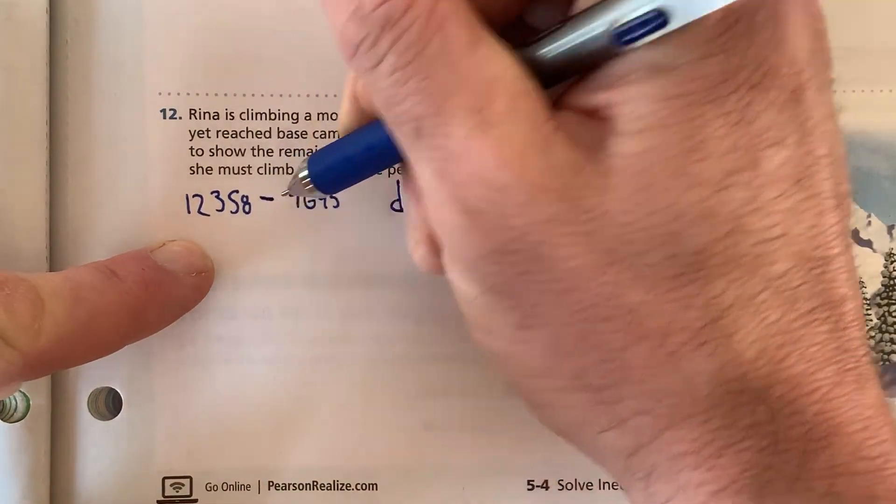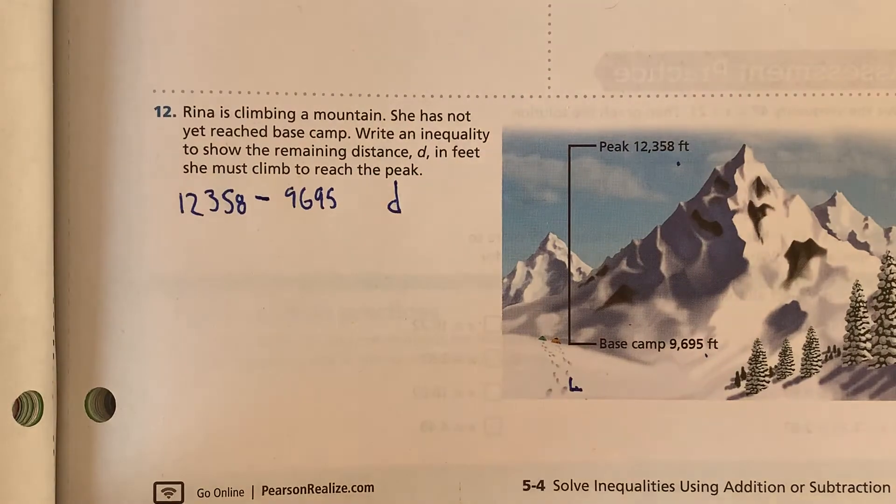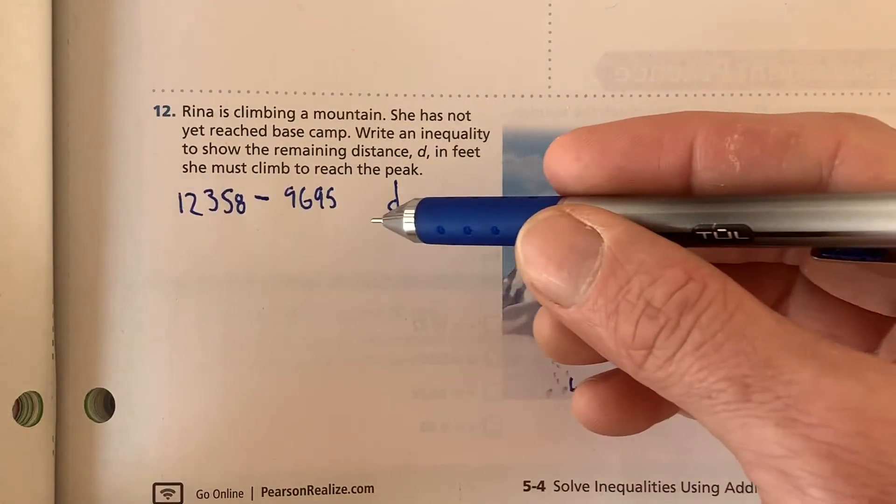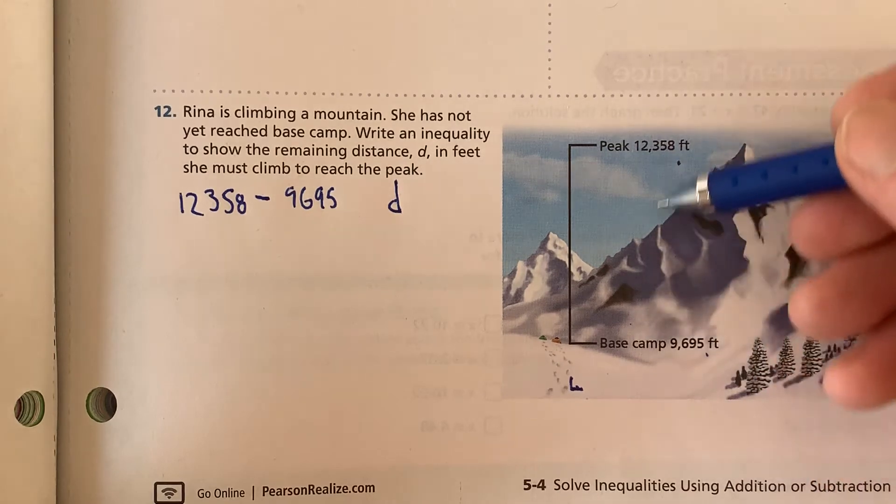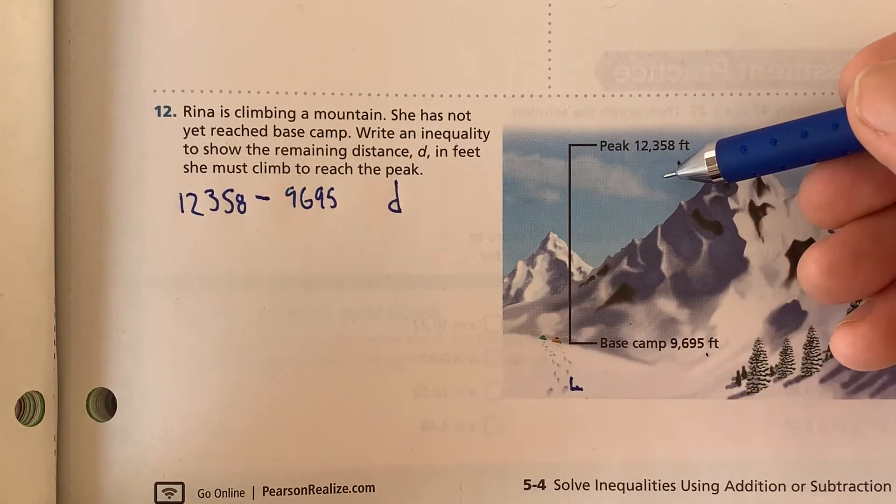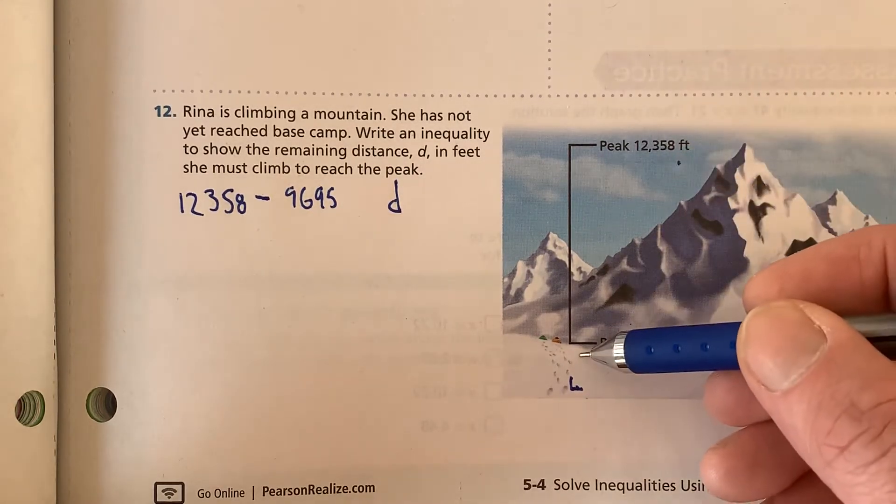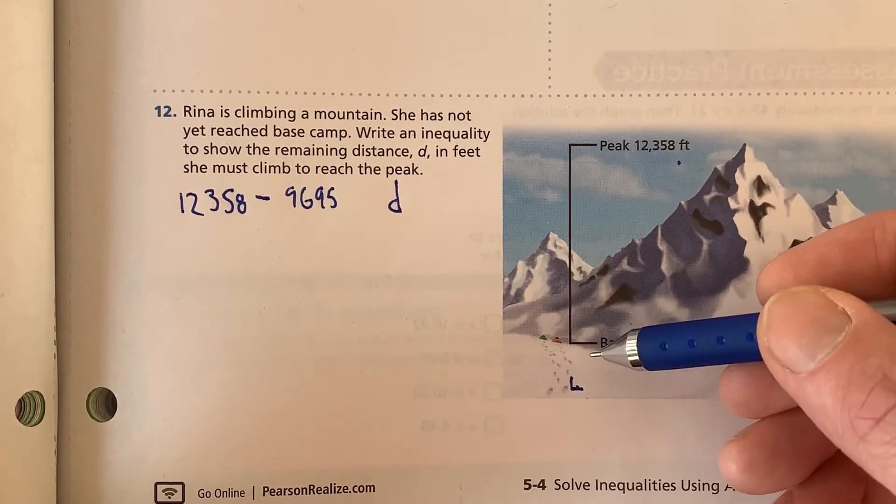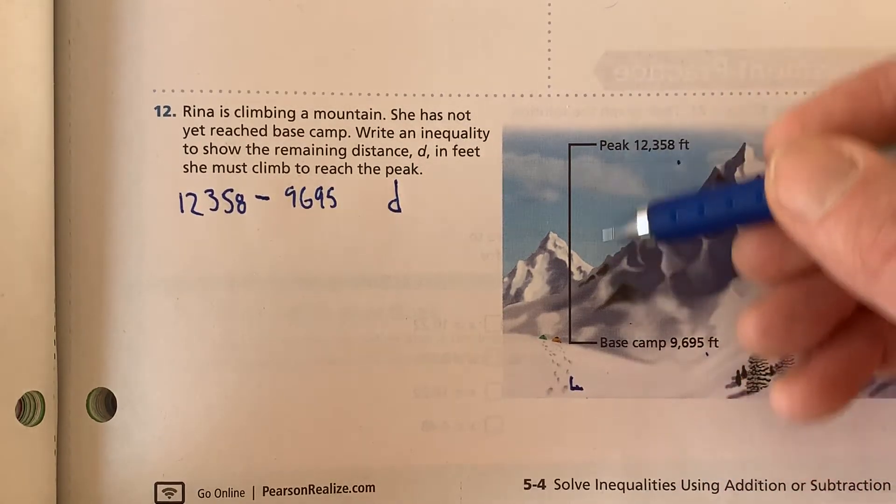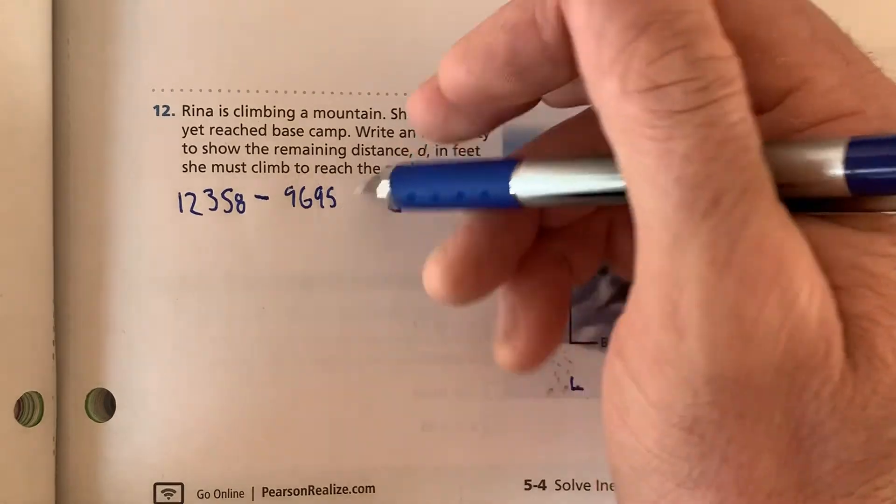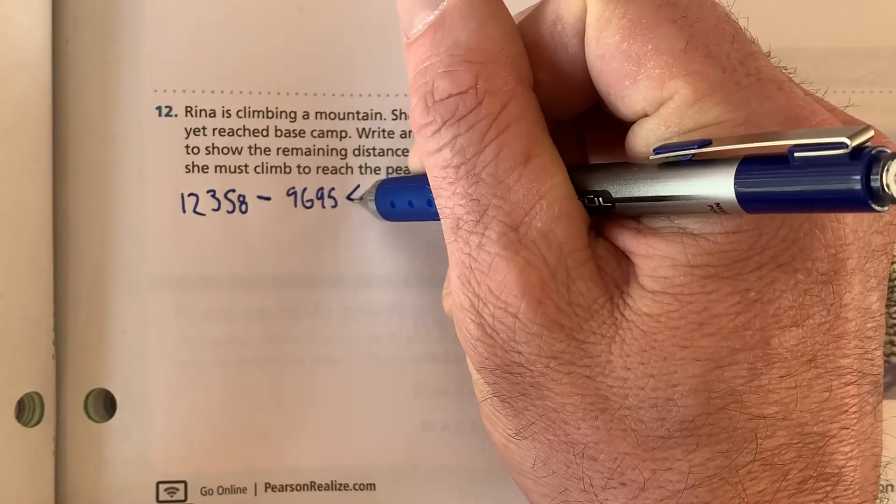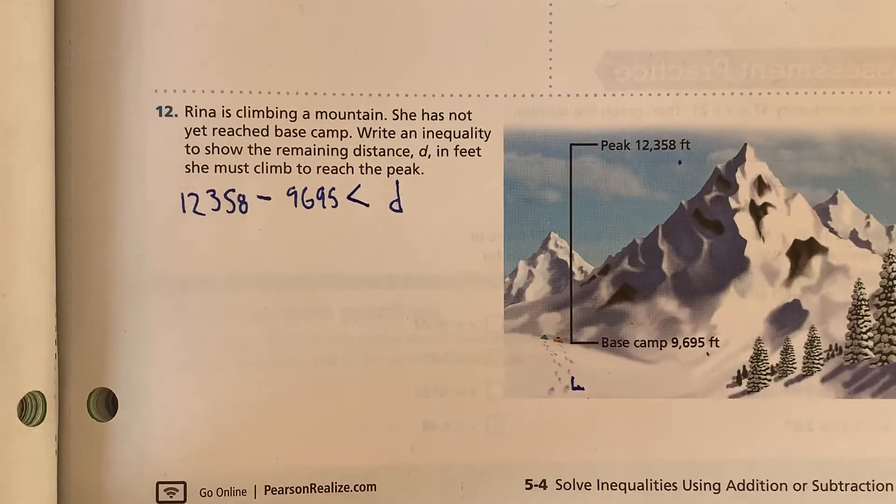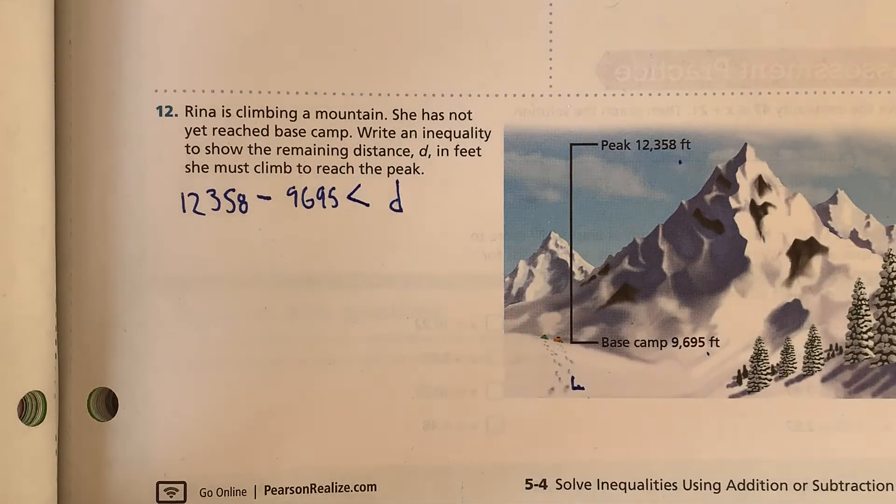And that number will tell us how far this is. But that doesn't count for this. So I can't do any less than this. So that means we have to do, at the bare minimum, that amount.